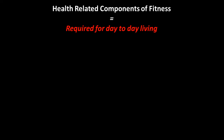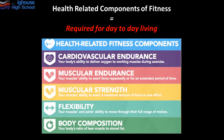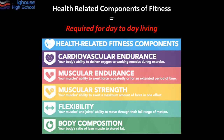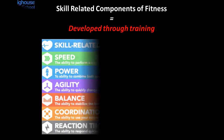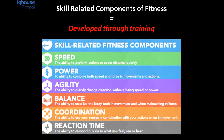From those 11 components we can subdivide them into two different groups. The first group is called health-related components — these are required for day-to-day living that people would naturally acquire. Everyone has a standard level of cardiovascular endurance and strength just to do everyday tasks. The next set of components are called skill-related, and as the term implies, these are developed through training — things like speed, agility, and coordination only come through training, not general day-to-day living.